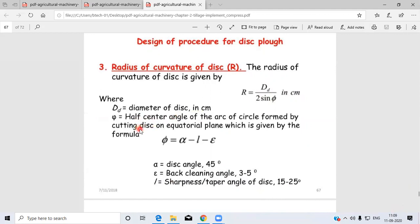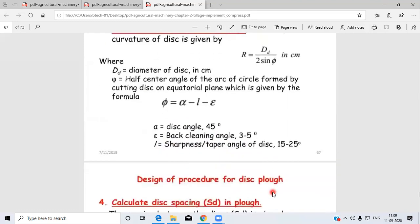φ is the half center angle of the arc of circle formed by cutting disc on equatorial plane, given by φ = α - i - ε, where α is the disc angle (45°), ε is the back leaning angle (3° to 5°), and i is the sharpness or taper angle of the disc (15° to 25°).